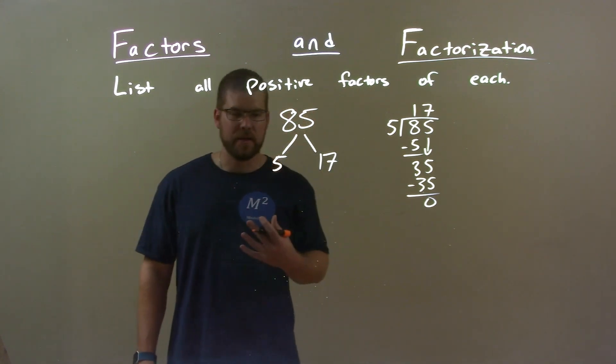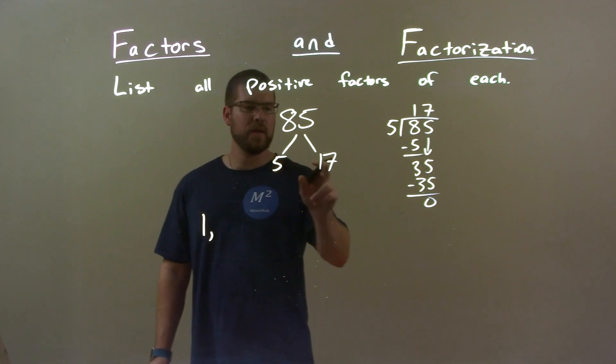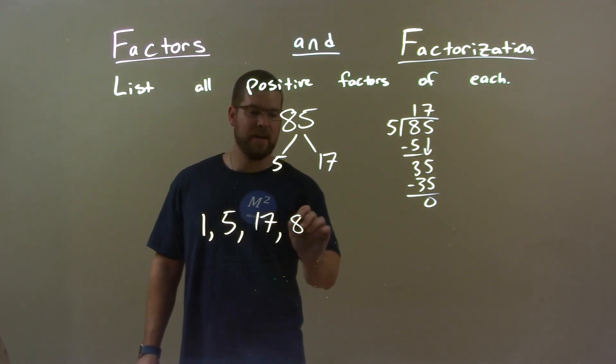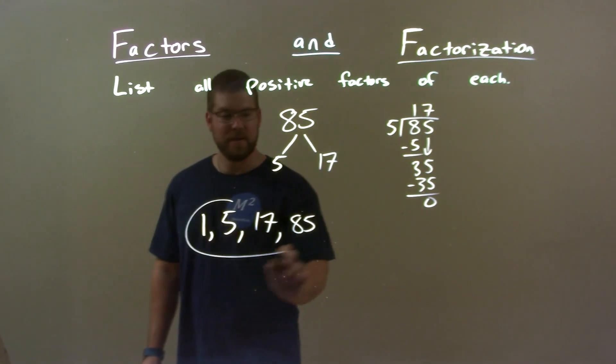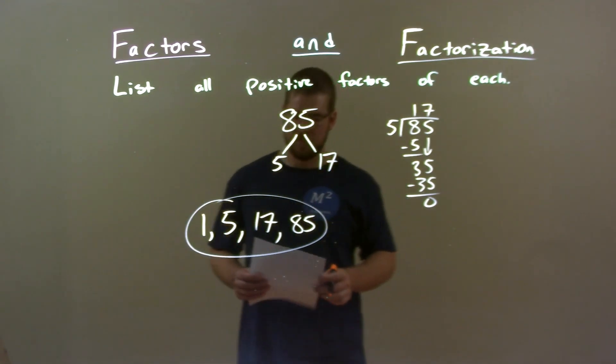Now, we have to compile our list. Well, one will always be a number. Then, with these multiplications, our only two numbers here are prime, we basically have our list. Five is the number here, seventeen, and then eighty-five for the number itself, and that's it. That's what happens. We only break down one step, and they're both prime numbers.